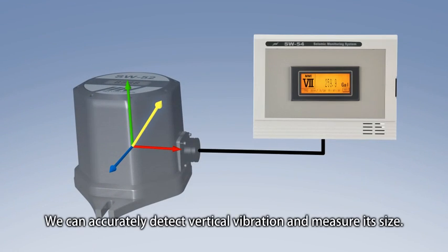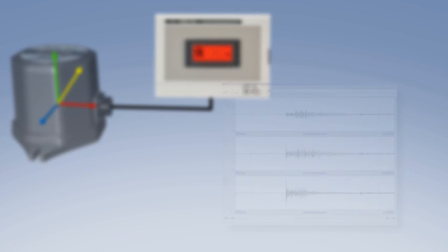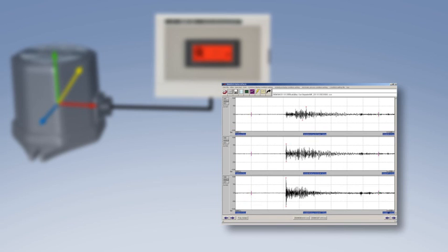Mechanical sensors cannot detect vertical vibrations. IMV's servo accelerometers can capture vibrations in any direction and record their value.